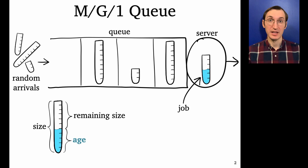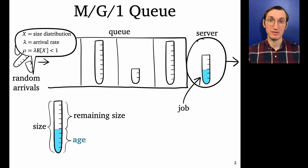So we have jobs randomly arriving over time. Specifically, there's a distribution X from which each job size is independently drawn. We've got Poisson arrivals at rate lambda, and this gives the system load rho equals lambda times E of X. And this load has to be less than one for the system to be stable.